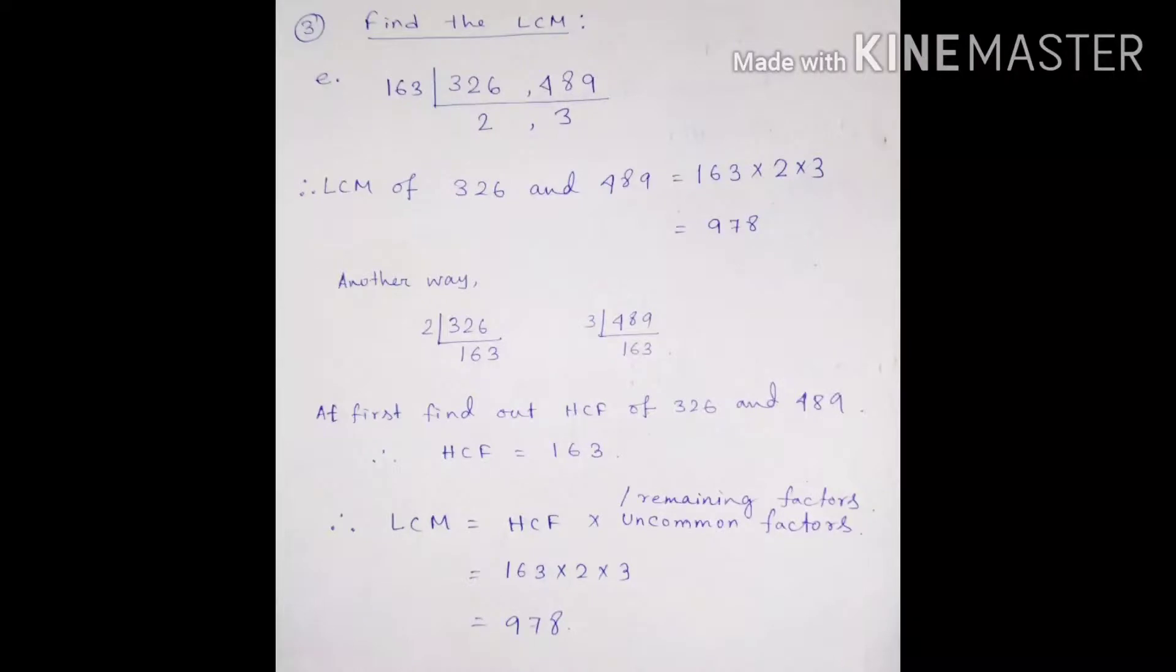What are the remaining factors? 2 and 3 are the left factors that we have multiplied with 163. Then we got 978 as LCM.